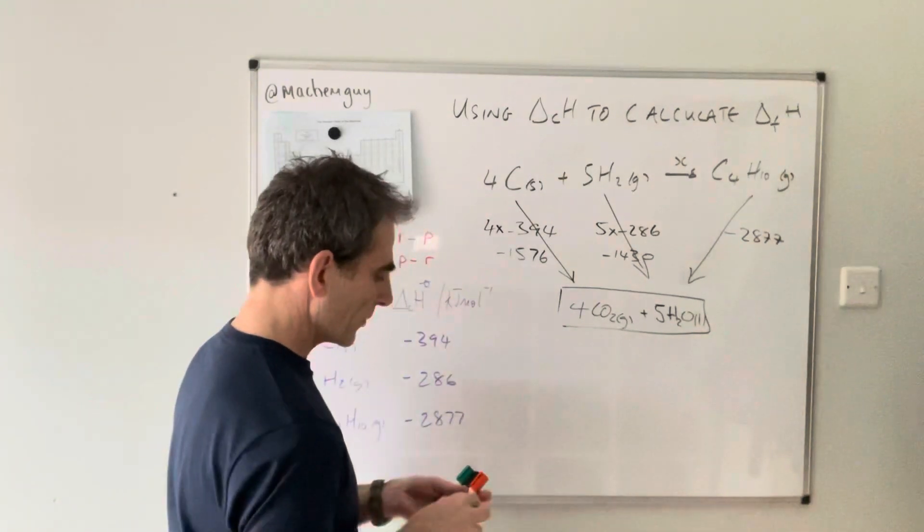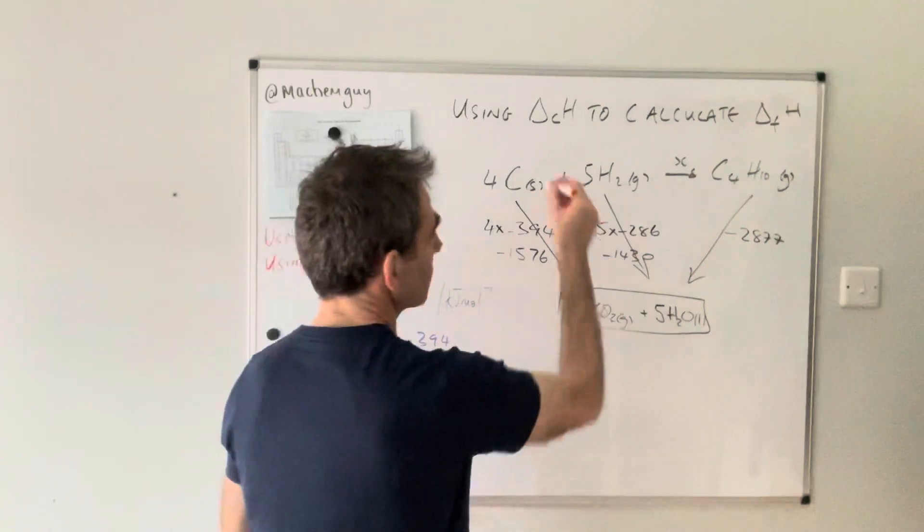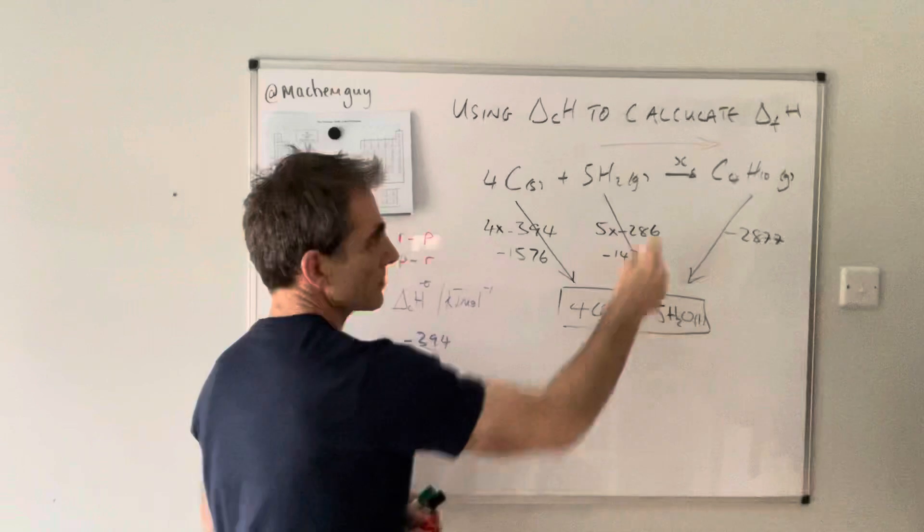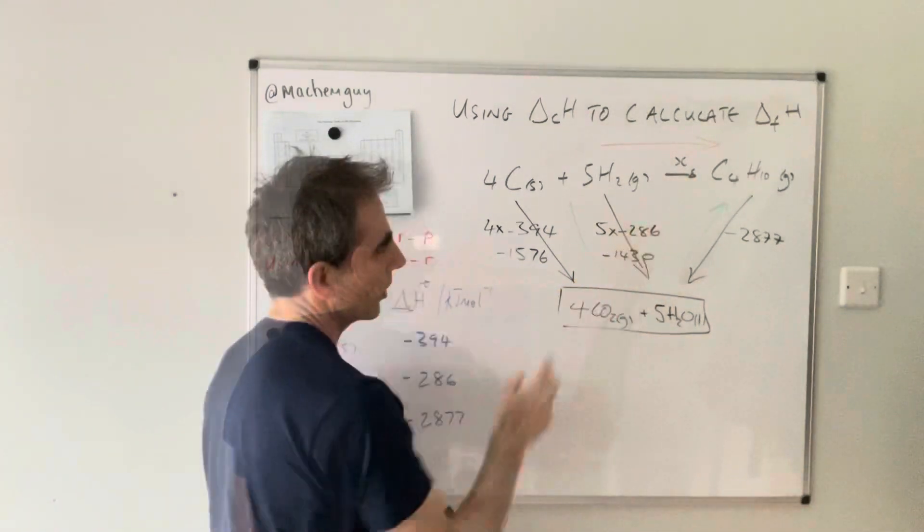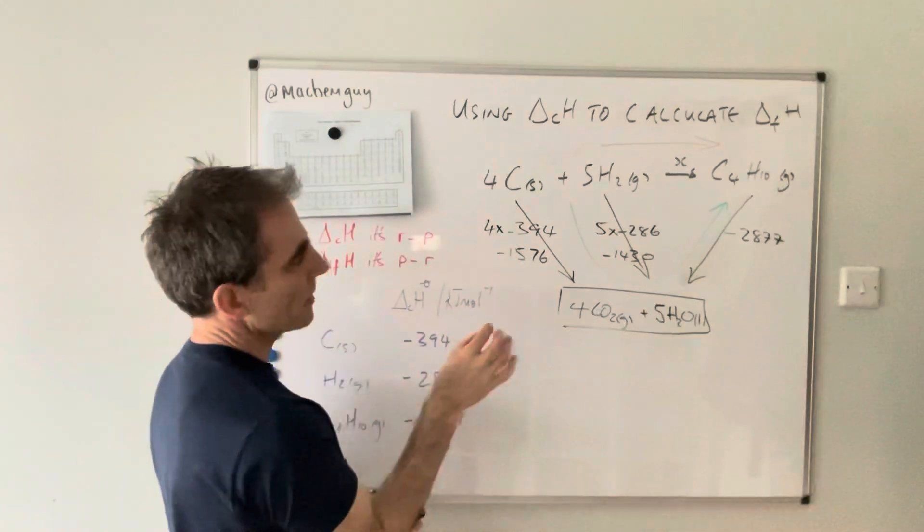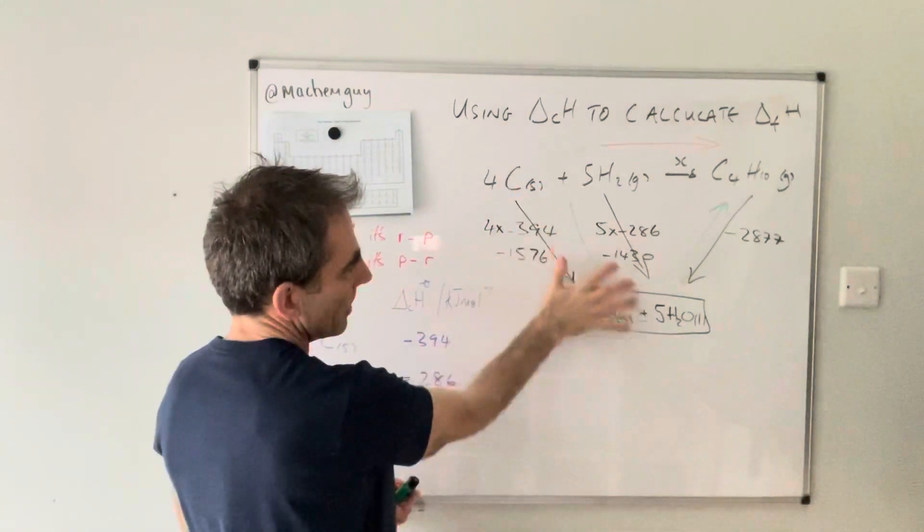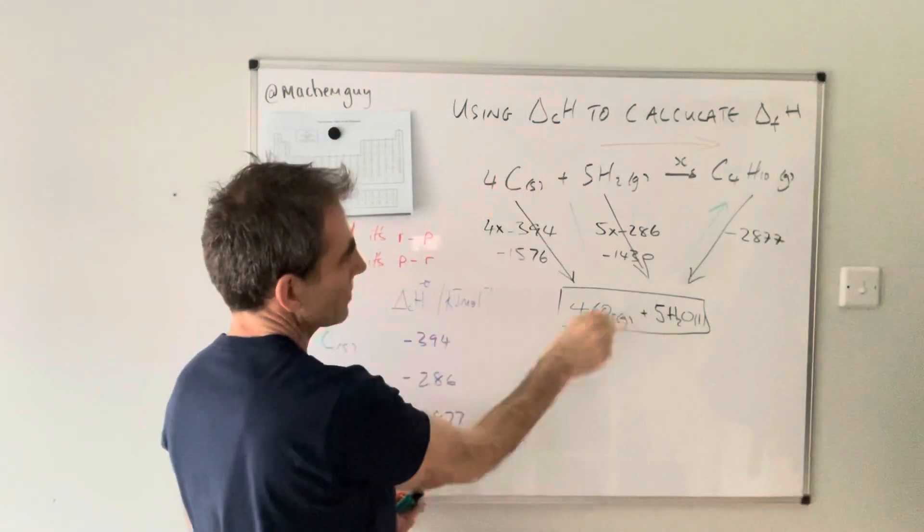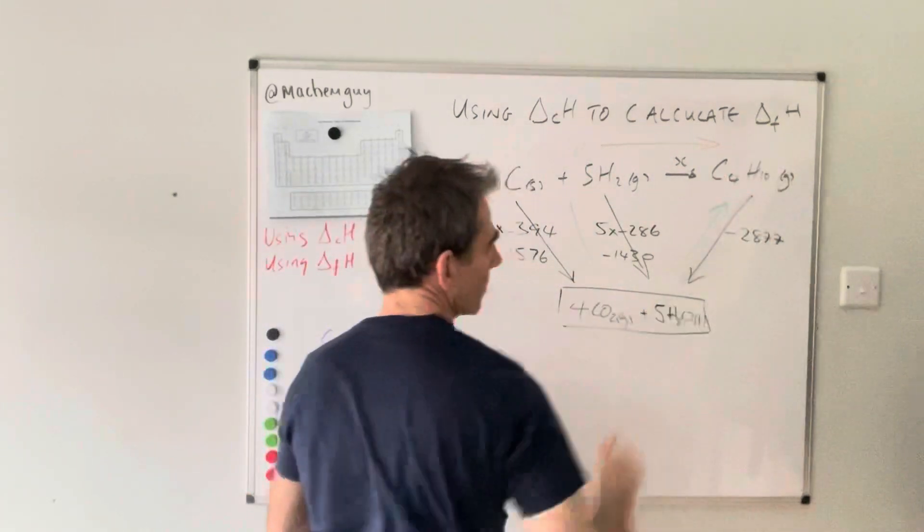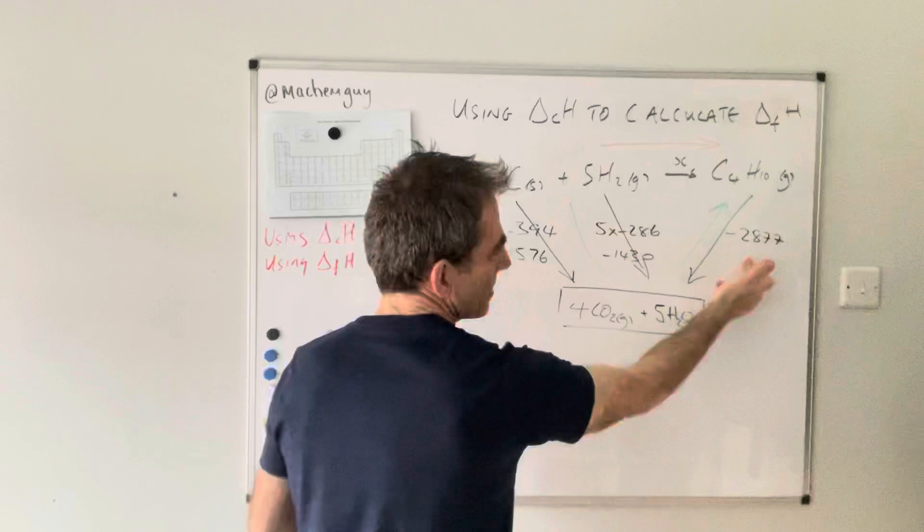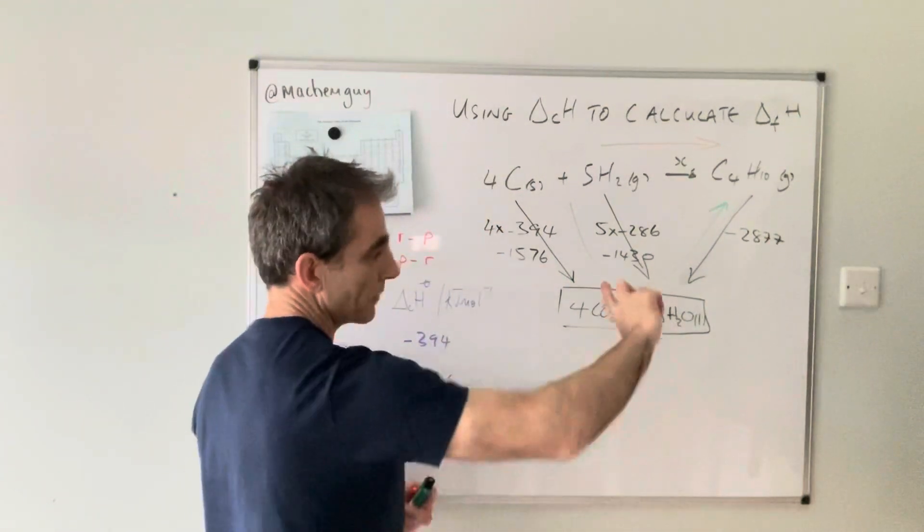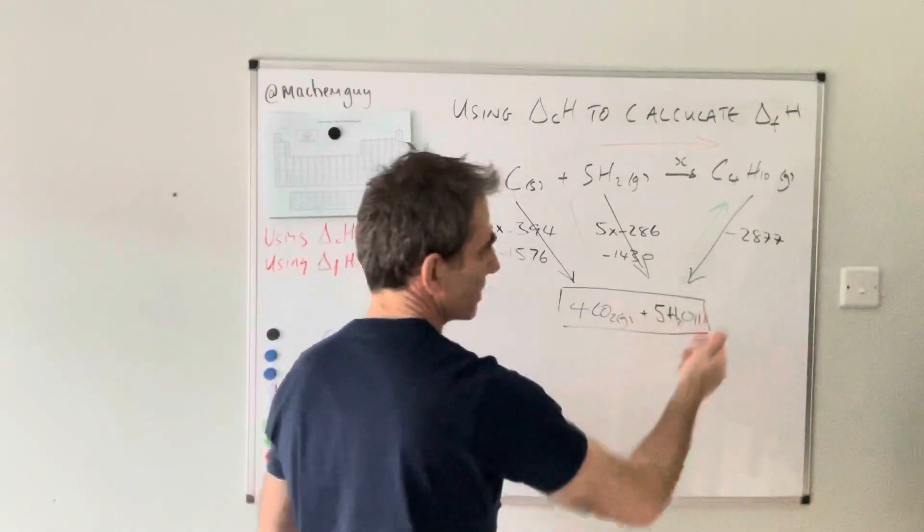We've got two routes essentially to go from here to here. You can go the direct route with that enthalpy change, or you can go this green way. If you look at the direction of the arrows, you can see that these two arrows—the combustion of the reactants—are going in the right direction for that green route. The problem is this arrow is pointing in the wrong direction, so we flip it around and subtract it.